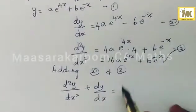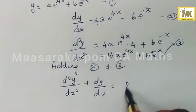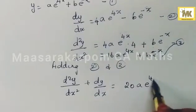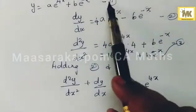Here is 16, here is 4, you will get 20a e to the power 4x.